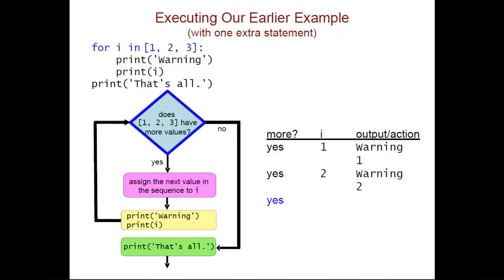We go back, there's one more value. We assign it to the variable i, so 3 is the new value of i. We then execute the body and get warning 3. We go back one more time and double check, and there's no more values. So we go to the statement that comes after, which in this case is that final print statement, and so it then gets executed.